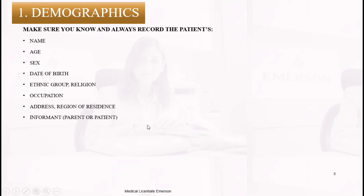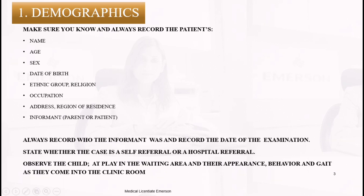You also need to record who is telling you the data — who is the informant. Is it the parent, the cousin, the maid? Whoever has brought the patient and is giving you the collateral history, you must indicate that. If the patient is good enough to speak for themselves, indicate that as well. Make sure you always record the informant and the date and time of the examination.